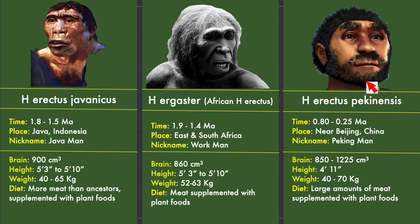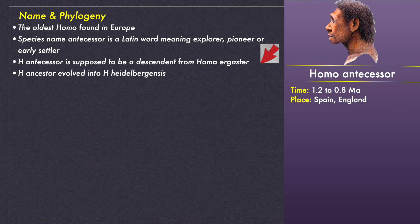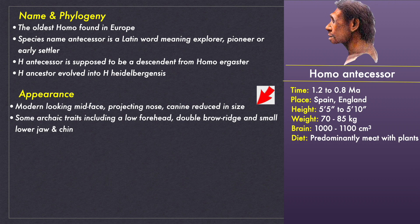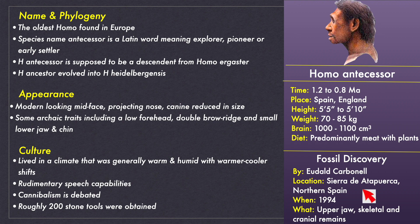Homo antecessor is the oldest Homo species found in Europe. Antecessor is a Latin word meaning pioneer or early settler. They lived in Spain and England between 1.2 and 0.8 million years ago, and are phylogenetically supposed to be a descendant of Homo ergaster and the ancestor of Homo heidelbergensis. They appeared very much like modern humans with a projecting nose and reduced dentition, with height and weight similar to ours. Archaic traits included a low forehead, double brow ridges, small chin and a slightly smaller brain than ours. Their diet was predominantly meat supplemented with plants. They lived in a generally warm and humid climate with warmer-cooler shifts, had rudimentary speech capabilities, and probably practiced cannibalism though this is debated. They used different types of tools made of stone, wood and bone for hunting, extracting meat and digging the ground. Their fossils were discovered by Eudald Carbonell in northern Spain in 1994, yielding upper jaw bones and skeletal and cranial remains.